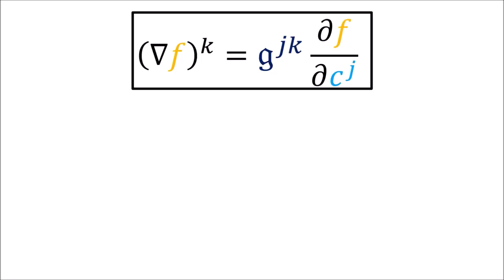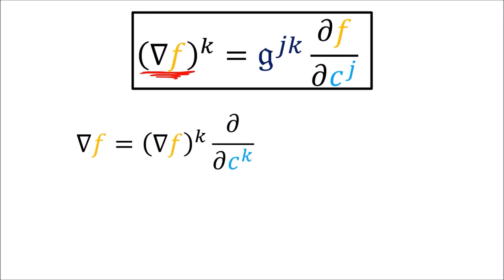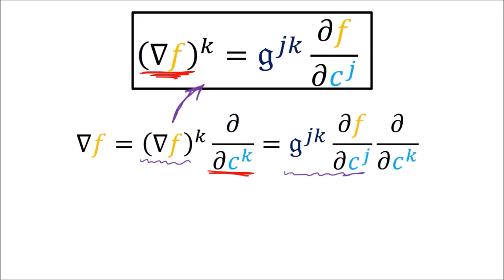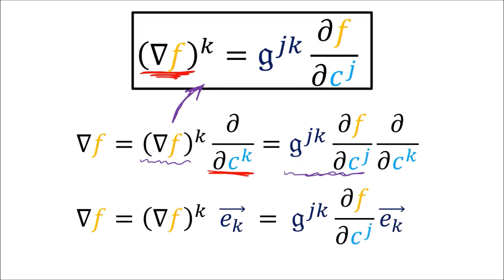This formula gives us the true formula for the components of del f or the gradient of f. We can write the gradient of f as a linear combination of basis vectors where these components equal this term, or in alternative vector notation with the basis vectors written out. You might be surprised by this formula because you've probably calculated the gradient many times before but never seen the inverse metric tensor components in it. So do these inverse metric tensor components really belong in here?